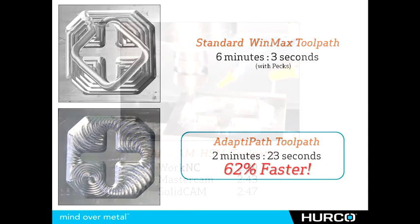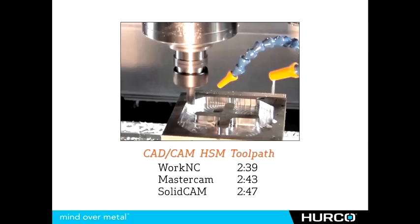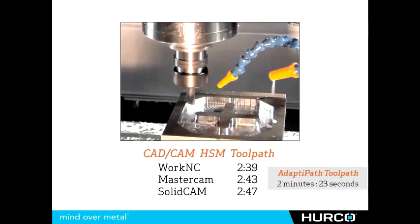Now let's look at how closely the Herco conversational Adaptive Path compares to CAM system high-speed machining algorithms. This test cut was sent to three companies — WorkNC, Mastercam, and SolidCAM — and they were asked to program it using their high-speed machining systems with the same parameters, speeds, and feeds. The results show that all systems are within a few seconds of each other. In fact, the conversational Adaptive Path ran just a few seconds faster than any of them — essentially the same toolpath nonetheless.